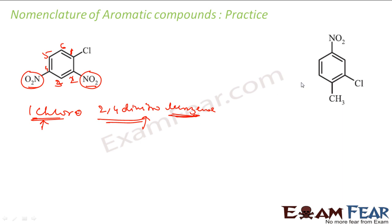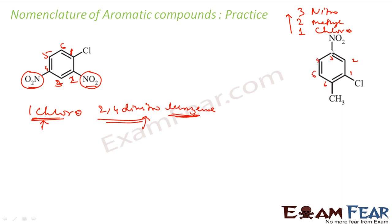Here I also have nitro, methyl, and chloro substituents. Going alphabetically — C comes before M and N — so chloro gets highest priority and I try to give it the lowest locant. Numbering gives chloro at 1, nitro at 3, and methyl at 6. The total sum is 1 plus 3 plus 6 equals 10.